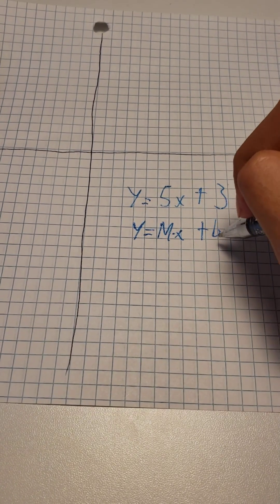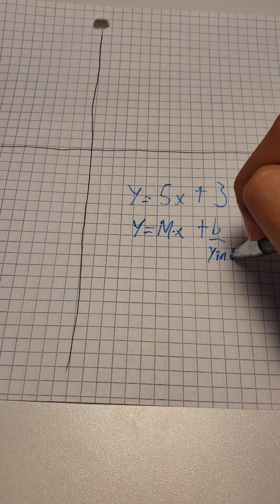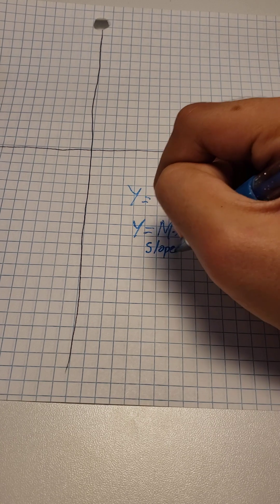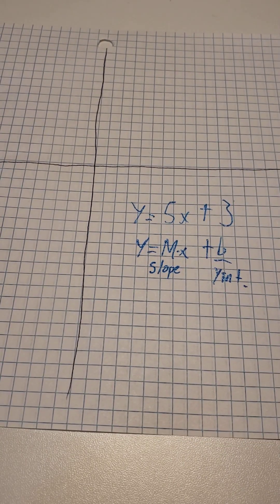Where b will be the y-intercept and m will be the slope, or how high or low the line will go.